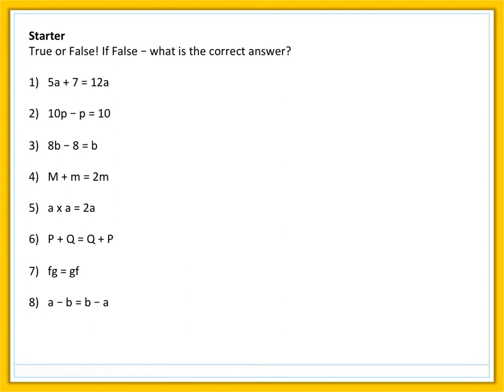OK, so example one, that is indeed false. These are unlike terms. We could say 5a plus 7a equals 12a, but we cannot actually simplify 5a plus 7 at the moment. So this is indeed false. Number two, 10p take away p equals 10. That is indeed false as well. 10p take away p is actually equal to 9p. Number three, 8b take away 8 is equal to b, also false. This doesn't simplify. These are unlike terms, 8b and 8. We cannot just wipe off the 8 and say we're left with b.